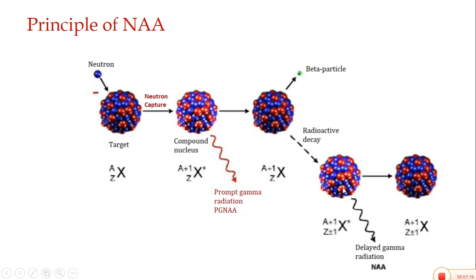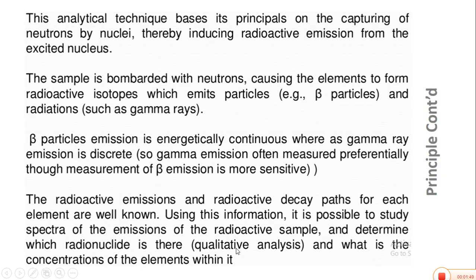This second emission is called delayed gamma radiation — emitted not at neutron capture, but after the degeneration of the neutron. Both prompt and delayed gamma radiation play a very important role in measuring the quantity as well as the kind of element inside the nucleus. This analytical technique is based on neutron capture by nuclei, thereby inducing radioactive emission from the excited nucleus. The sample is bombarded with neutrons, causing elements to form radioactive isotopes which emit beta particles and gamma radiation.